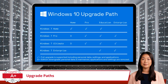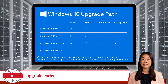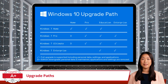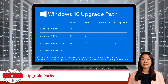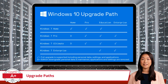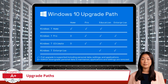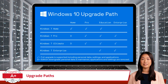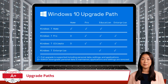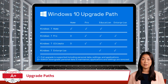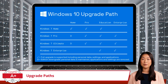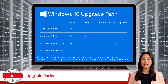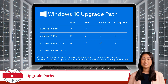The choice between these methods can vary depending on the Windows edition and version in use. Microsoft provides lookup tables that detail when an in-place upgrade is feasible, offering clear guidelines for upgrading to Windows 10 from earlier versions like Windows 7 and Windows 8.1. These tables help determine if the current edition and version are compatible with an in-place upgrade, ensuring a smooth transition while retaining files, settings, and applications.